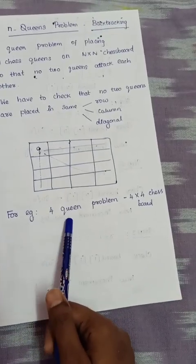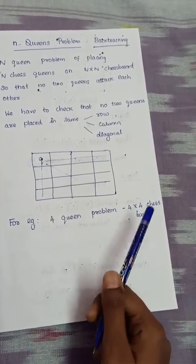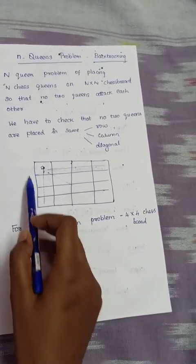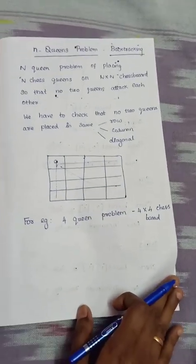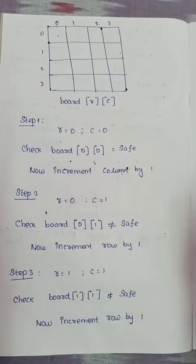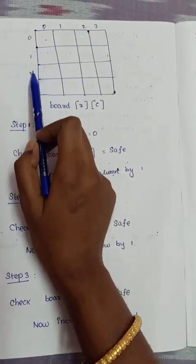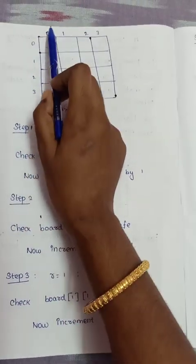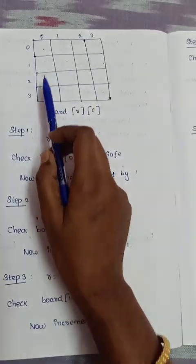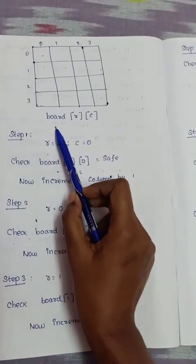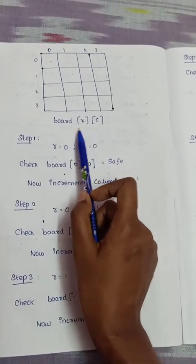For example, we have the 4-Queens problem on a 4×4 chess board. We draw a 4×4 matrix and denote row and column indices as 0, 1, 2, 3. The board positions are identified by row and column numbers.